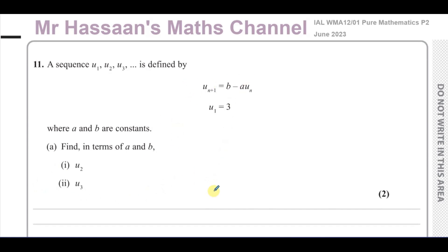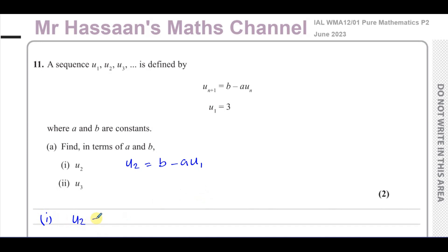So what does U(n+1) = B minus A times U(n) mean? Basically, to find a particular term, you take constant B and subtract A times the term before it. For example, U2 equals B minus A times U1. Since U1 equals 3, U2 is equal to B minus 3A.